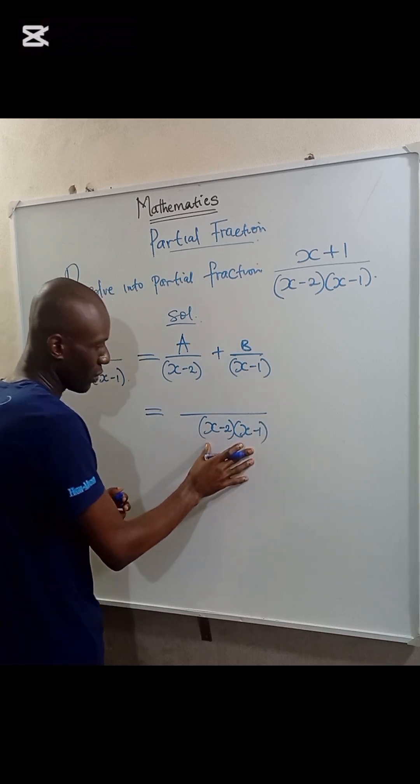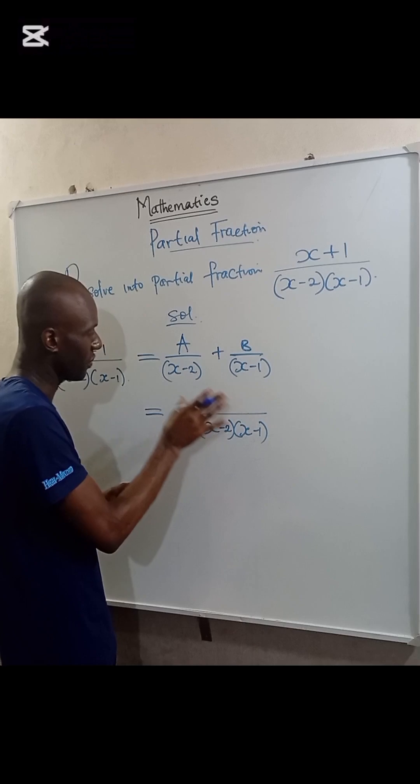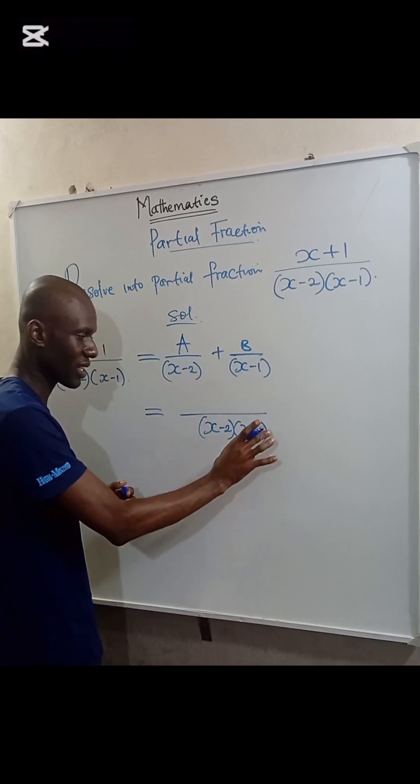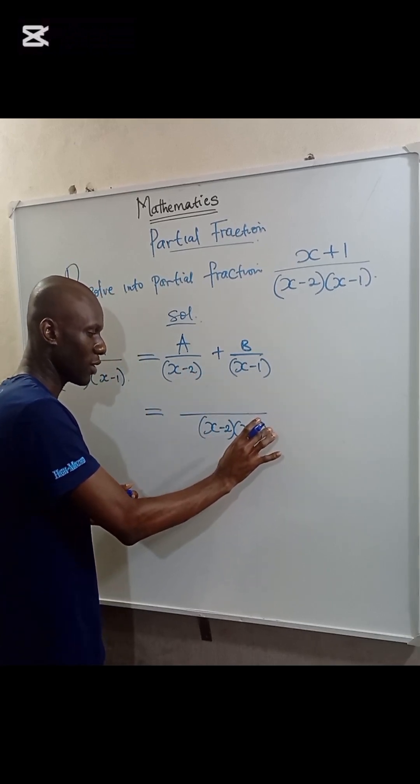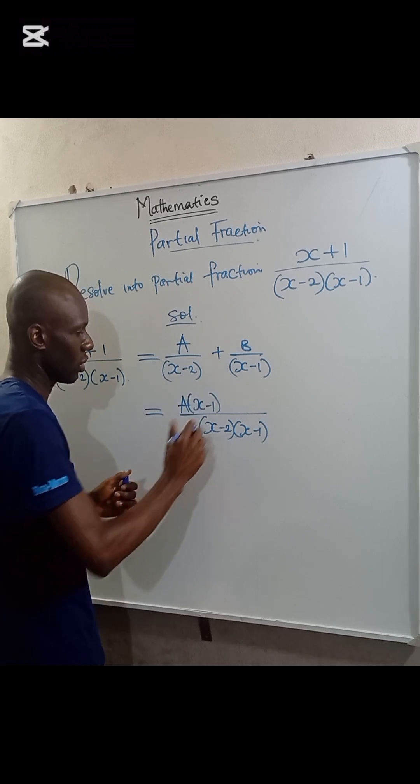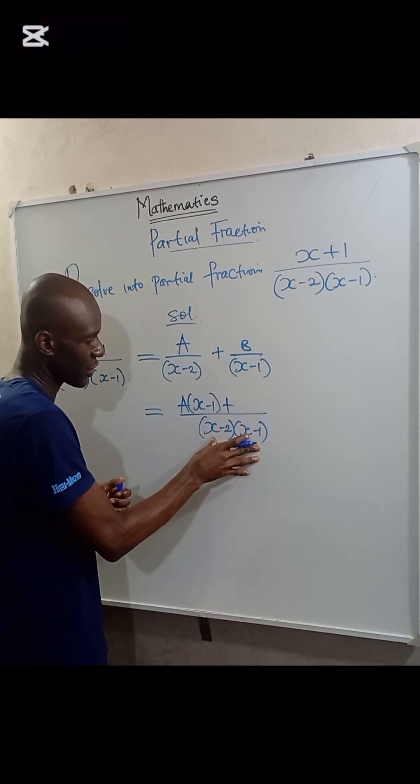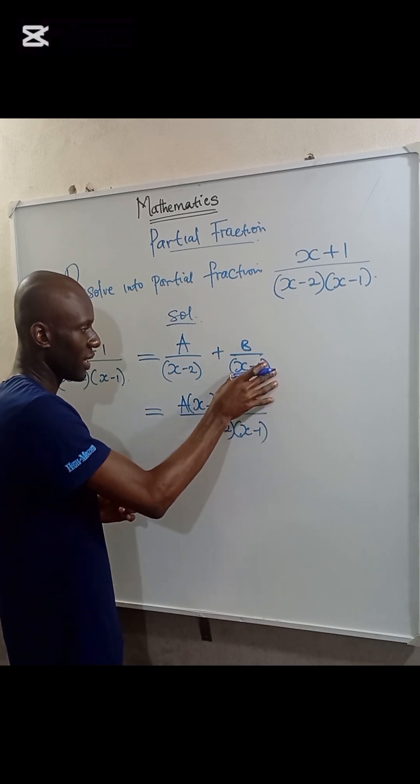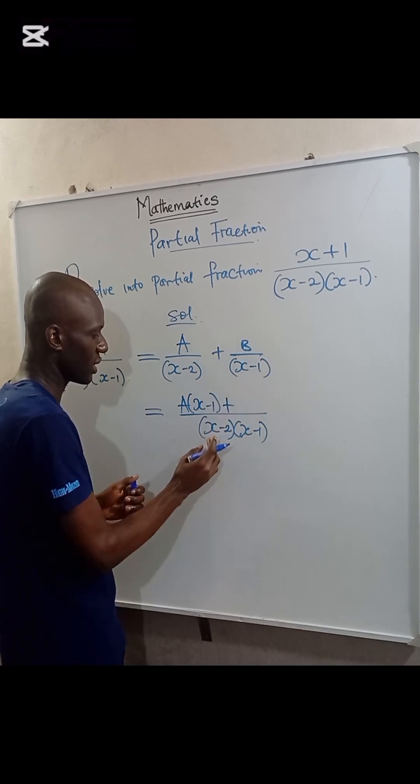X minus 2 multiplied by X minus 1 divided by X minus 2 will give us X minus 1, and the X minus 1 multiplied by A. We have also if this expression here divides X minus 1, we'll be left with X minus 2.